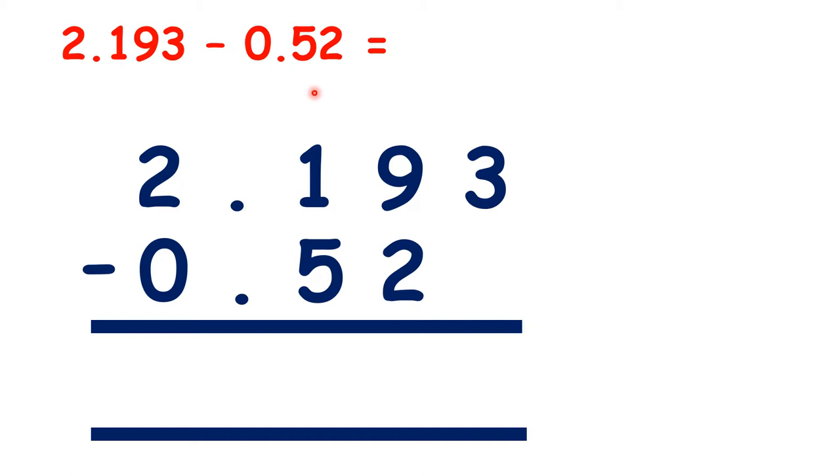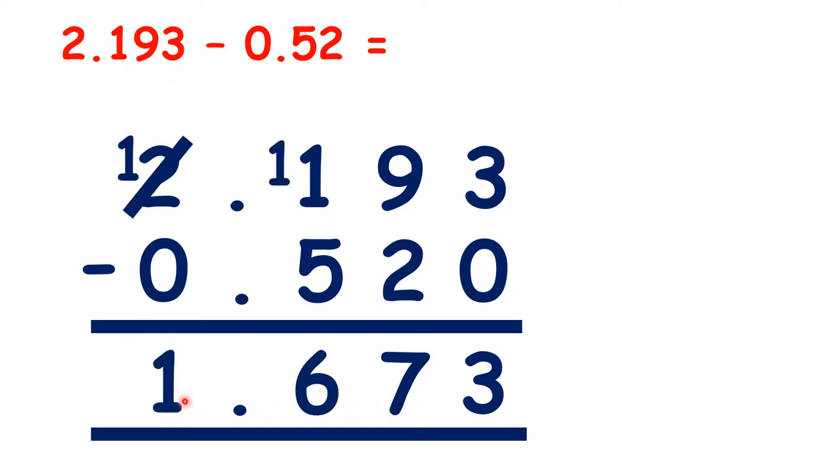Now, pause the video and see if you can answer this question. We copy down the decimal point, write a zero if it makes it easier for us, because we're not changing the question when we do this. 0.520 is the same as 0.52. Both tell us that we're subtracting only 5 tenths and 2 hundredths. Now we can subtract as normal to get 1.673.